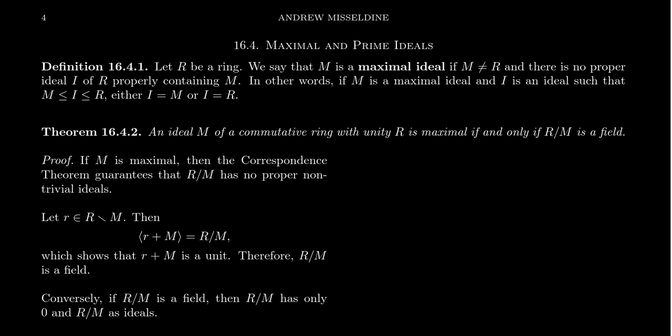Now, if you mod out by M, then M becomes the zero ideal. And the whole ring R itself, you mod out by M, that's the whole ring. So there's no other ideals. Because we have no other ideals, there's just the two ideals, the zero one and the whole one, that makes it into, as we talked about before, a skew field.